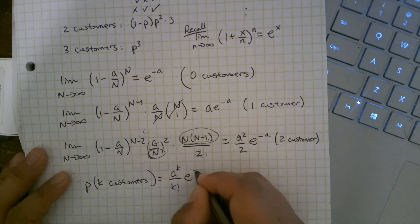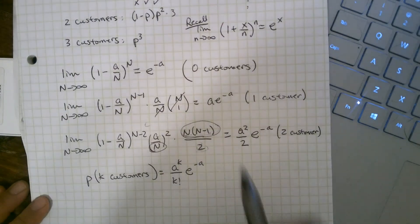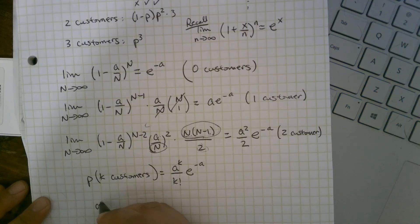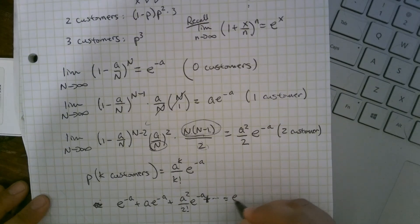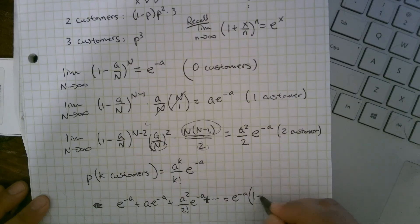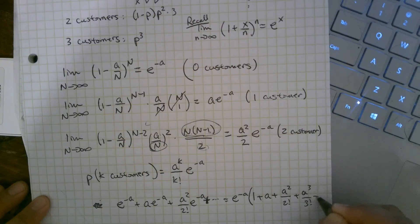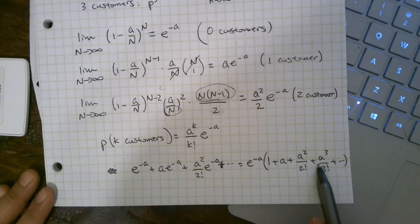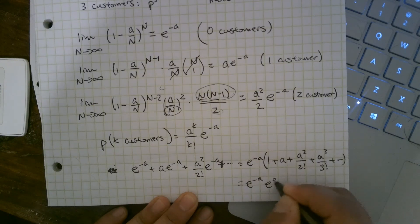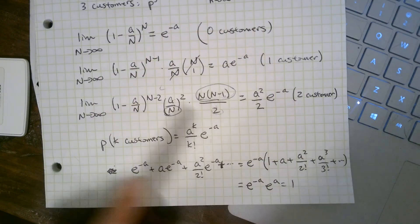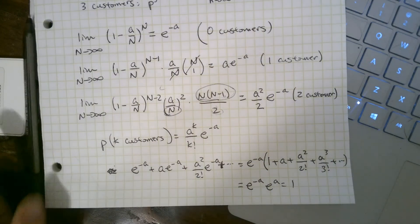Let's verify: summing all probabilities — e^(-a) + a·e^(-a) + a²/2!·e^(-a) + a³/3! + … — factor out e^(-a) and you get e^(-a) times the Taylor series 1 + a + a²/2! + a³/3! + … , which is another calculus definition of e^a. So the total is e^(-a) · e^a = 1. All probabilities add to one, which confirms our math is correct.